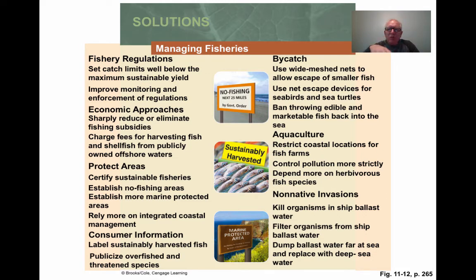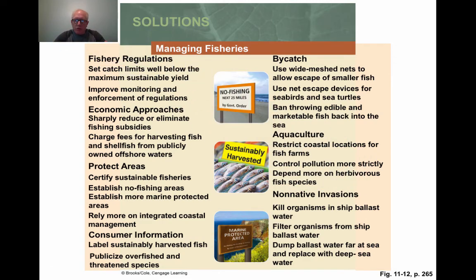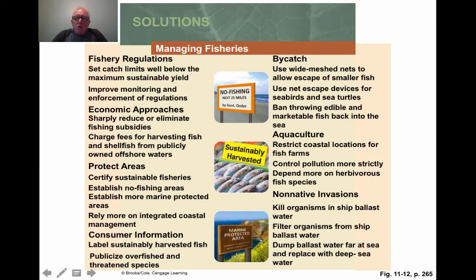Ship ballast water is an important vector for invasive species. Ships carry water inside to stay balanced in the water they're floating in. Historically, ballast water taken on in one port was released in another, introducing invasive species. The Great Lakes were invaded by the zebra mussel this way — which was also a free-response AP question in 2010. Solutions include treating ballast water or releasing it far out at sea rather than in port.